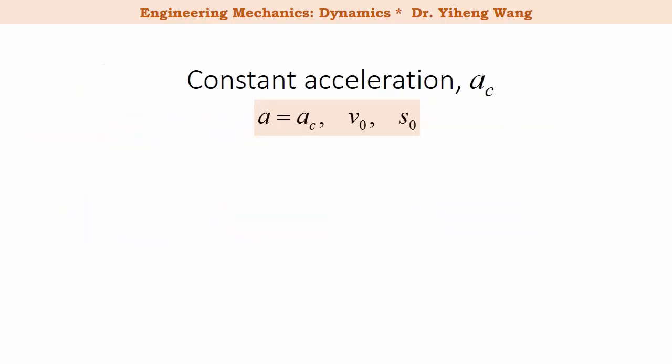So if acceleration is a constant ac, and at time zero the initial velocity of the object is given as v₀ and the initial position is given as s₀, then from the equation a equals dv/dt we can rearrange it to be dv equals a times dt, which is constant acceleration ac times dt. We can now integrate both sides.